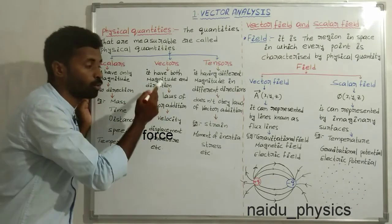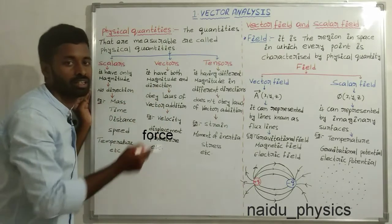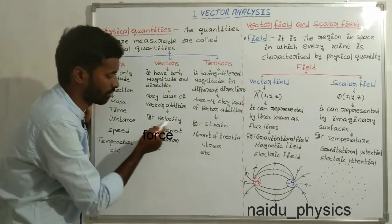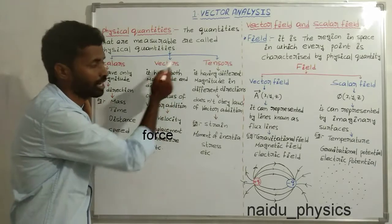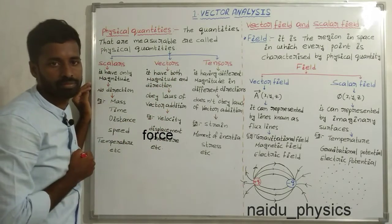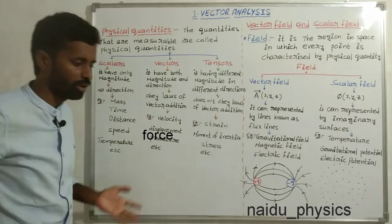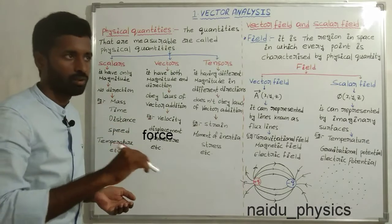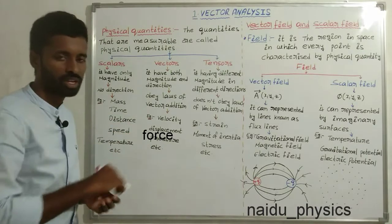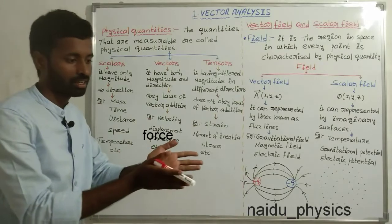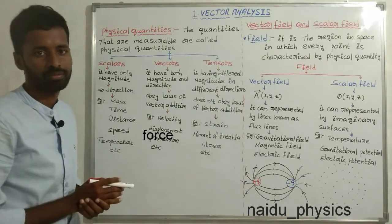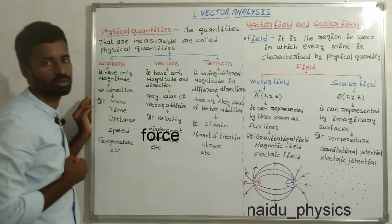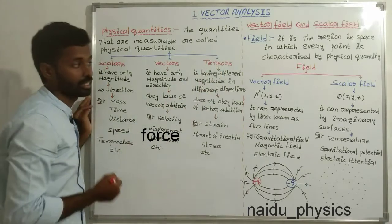Next, vectors. Vectors have both magnitude and direction, and obey vector addition laws. For example, velocity is a vector quantity. Consider a fluid flowing on the floor — we calculate the velocity of the fluid particles and also the direction of the fluid flow. That means velocity is a vector quantity.